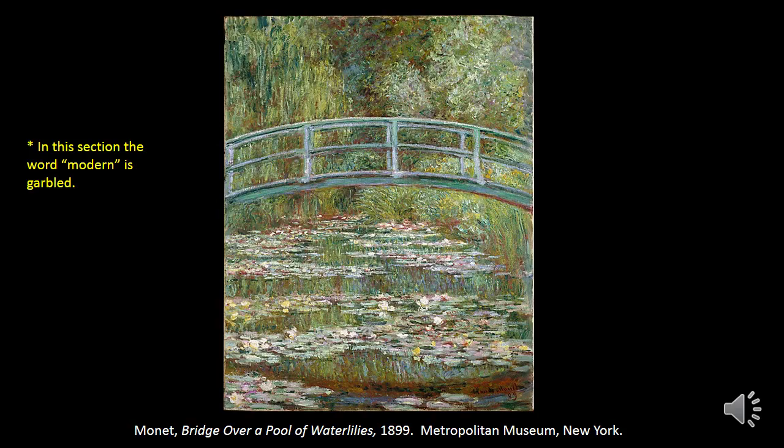Modernism came about when artists began to experiment with new ways of making art that would reflect the technology, ideas, and experience of the modern industrial era in which they lived. Impressionist artists like Monet, by painting in the way they did, were challenging artistic traditions and the crisp, detailed style of painting that had been in place for hundreds of years. So although his bridge over a pool of water lilies looks like a simply pleasant and beautiful landscape, don't be fooled — it was quite daring and cutting edge at its time.